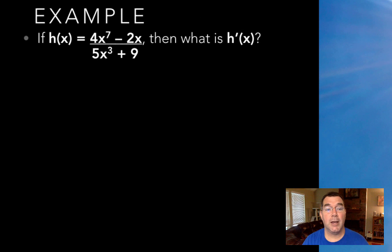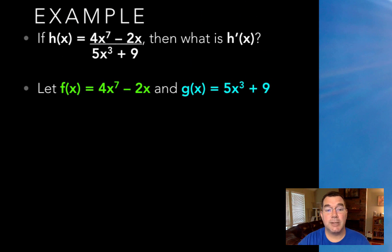And here's an example. If I have this function h and it is 4x to the 7 minus 2x all over 5x to the 3rd plus 9, what is the derivative of that? So f of x is going to be the top function, g of x is going to be the bottom function, and here are their derivatives.